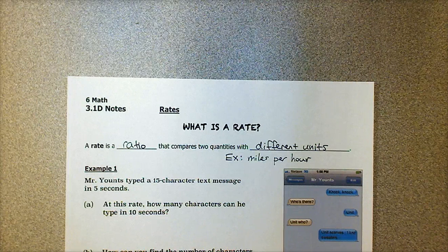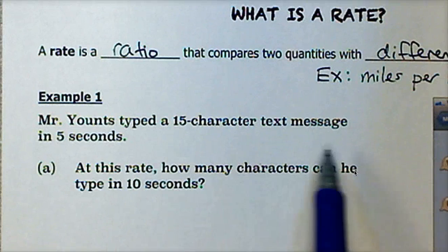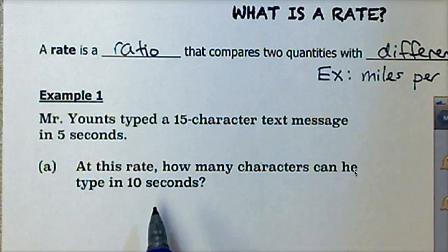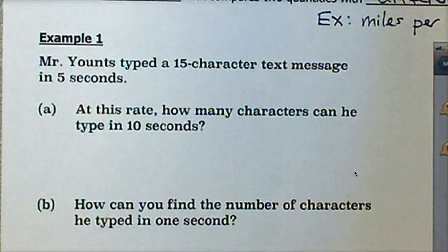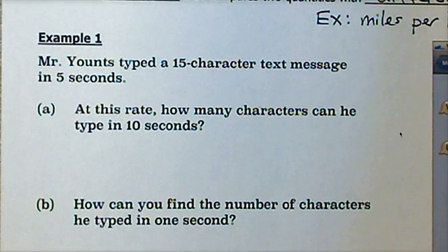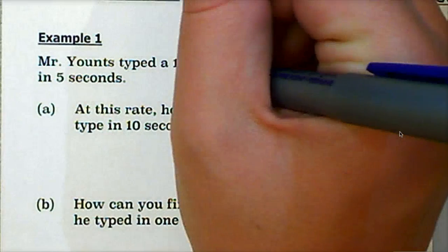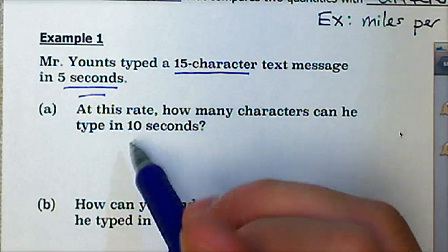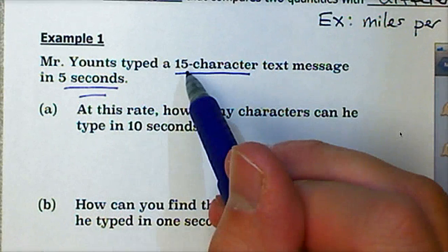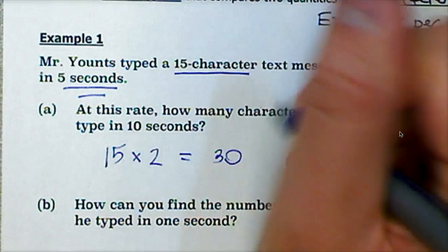In example one, Mr. Yance typed a 15-character text message in five seconds. I'd like you to pause the video and try to answer questions A and B on your own, then click play to check your answer. This is a very simple rate problem. If I can type 15 characters in five seconds, then in 10 seconds — because 10 is 2 times 5 — it would make sense that I can type twice as many characters: 15 times 2, or 30 characters in 10 seconds.